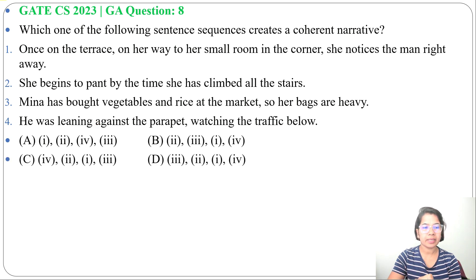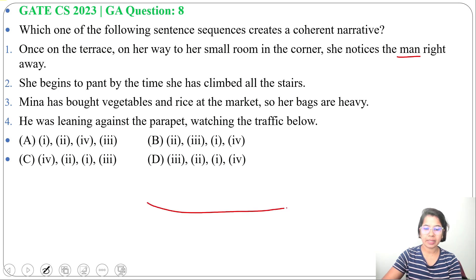Let's read one by one sentence. First sentence: once on the terrace, on her way to her small room in the corner, she noticed the man right away. So there is a terrace and a small room in the corner. When she was going to the terrace, she noticed a man standing here.